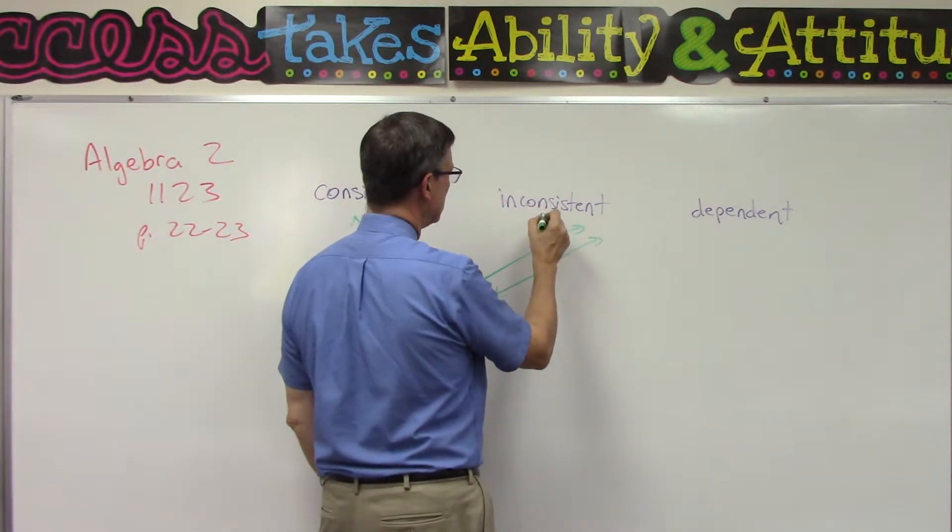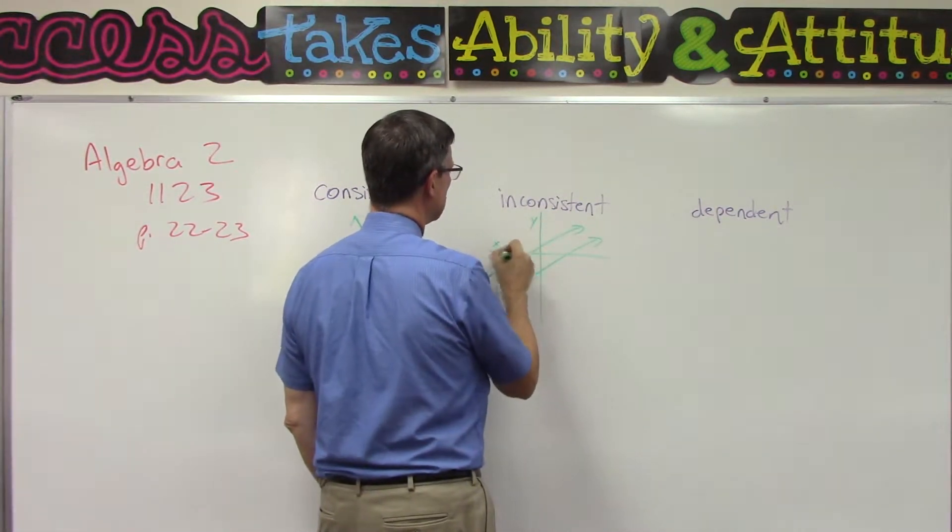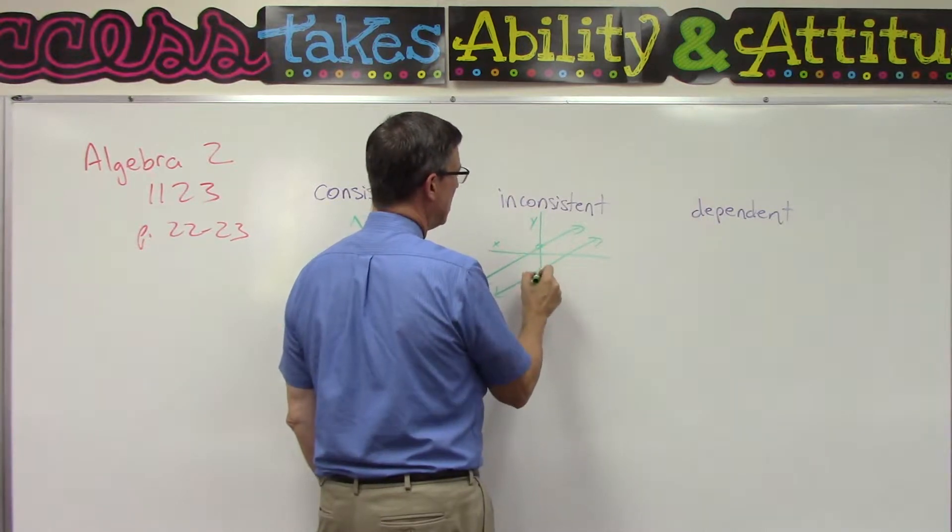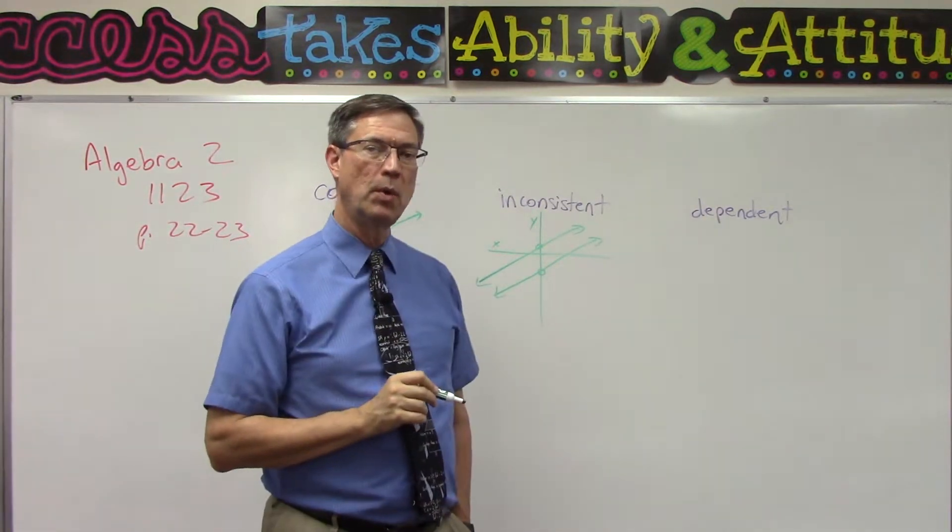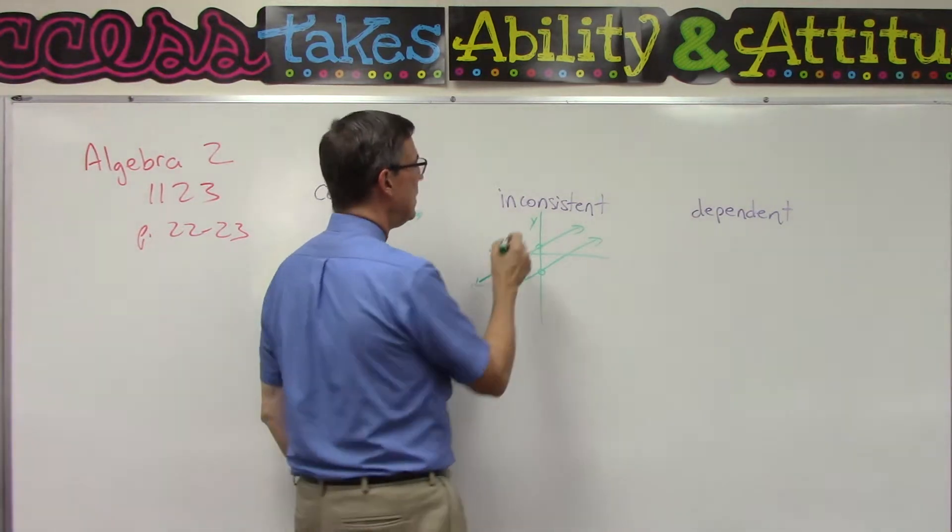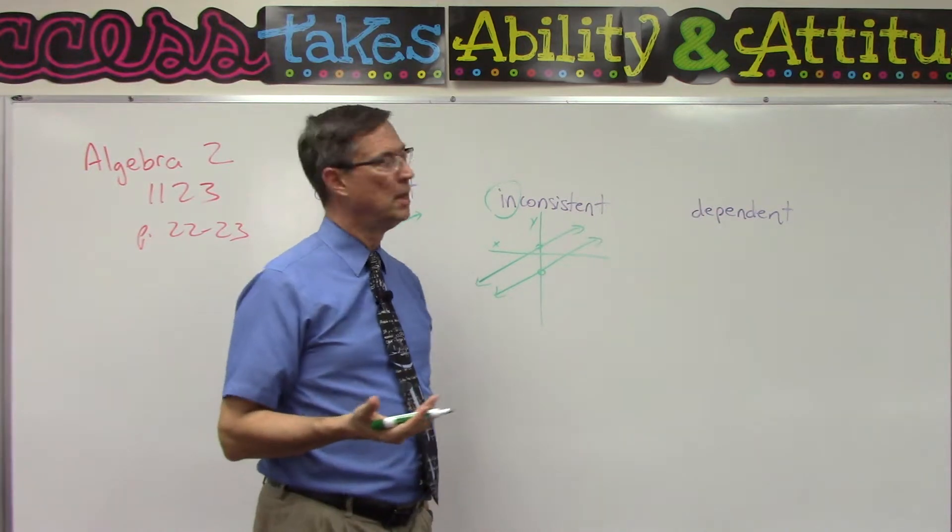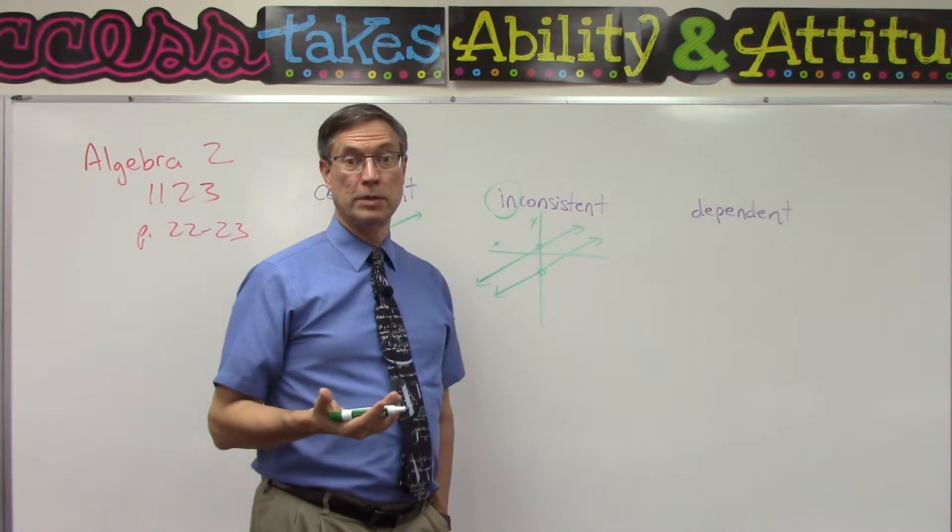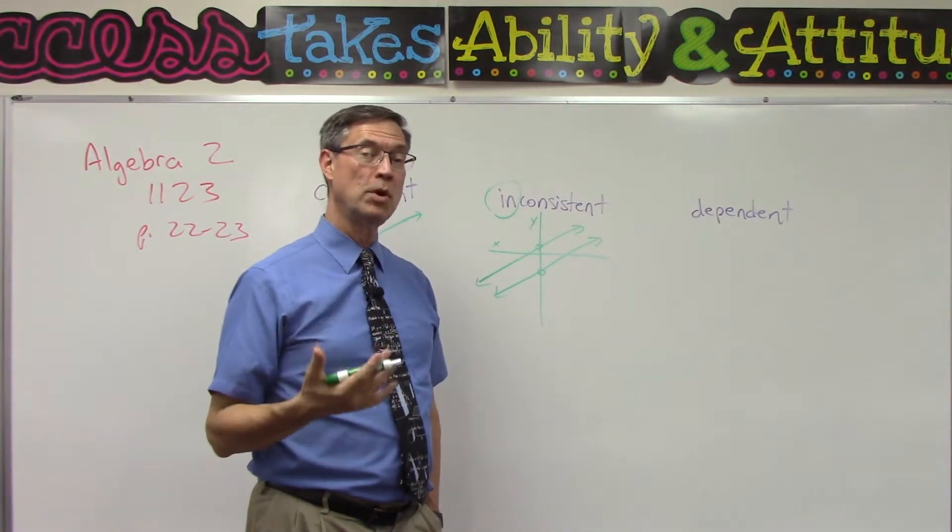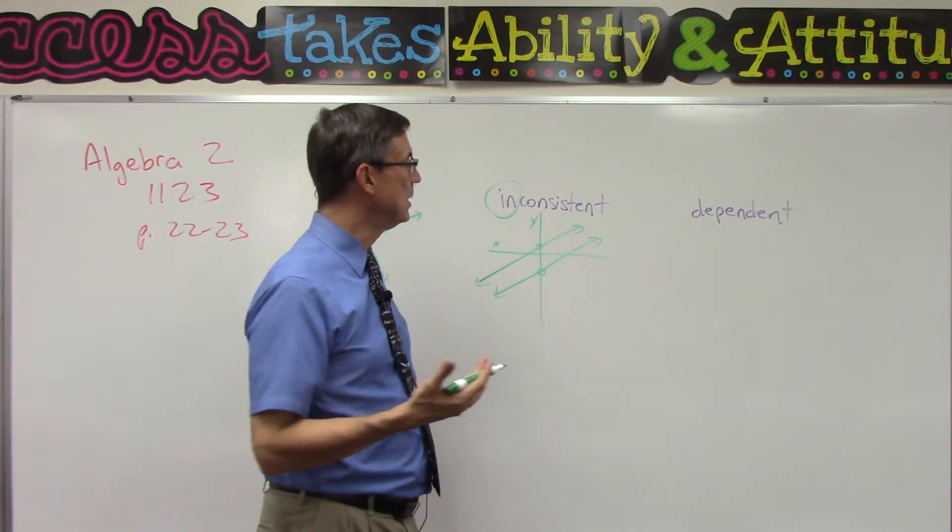They cross the y-axis at two different points but have the same slope - then we say they are inconsistent. We just have to memorize this. Consistent is when they cross and form one point, there's an xy value that represents it. Inconsistent means the slopes are the same but different y-intercepts.